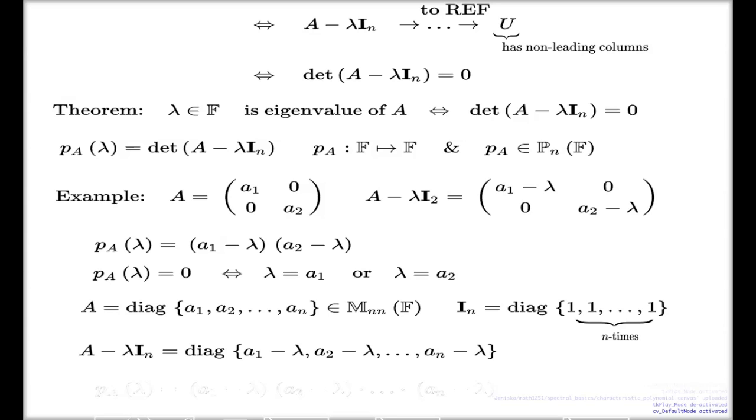And, as I mentioned before, determinant of a diagonal matrix is a simple product of elements on the diagonal. So, if I compute the determinant of my matrix, which is the characteristic polynomial associated with the matrix A, that will be the product of the linear factors A1 take lambda, A2 take lambda, AN take lambda.